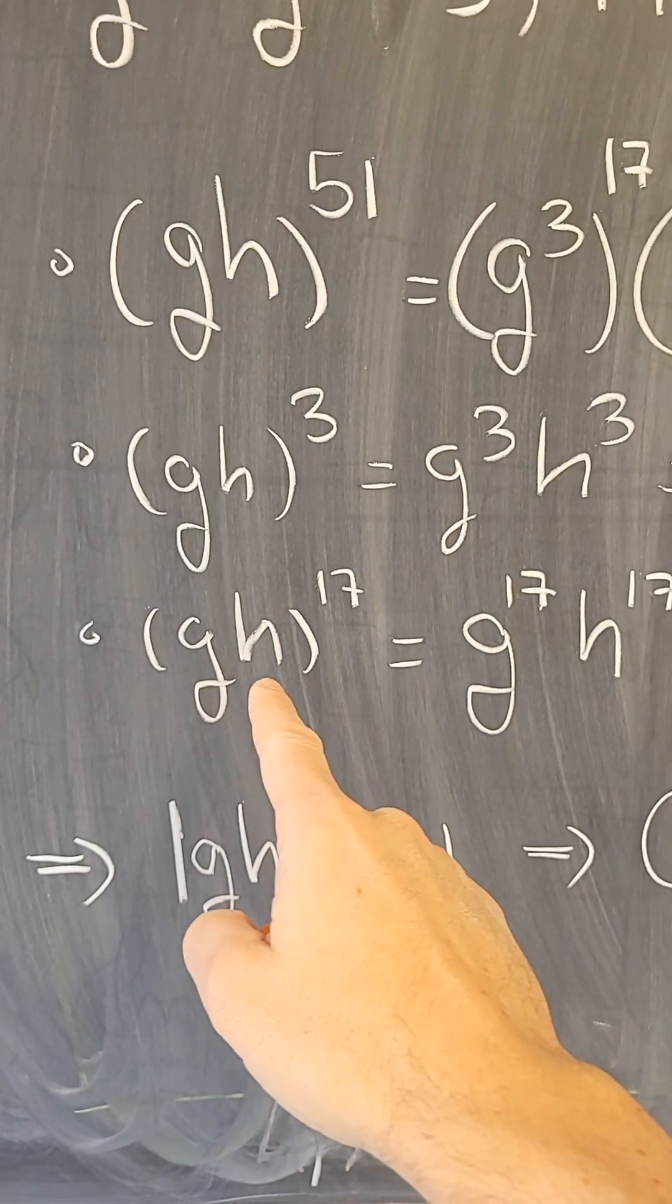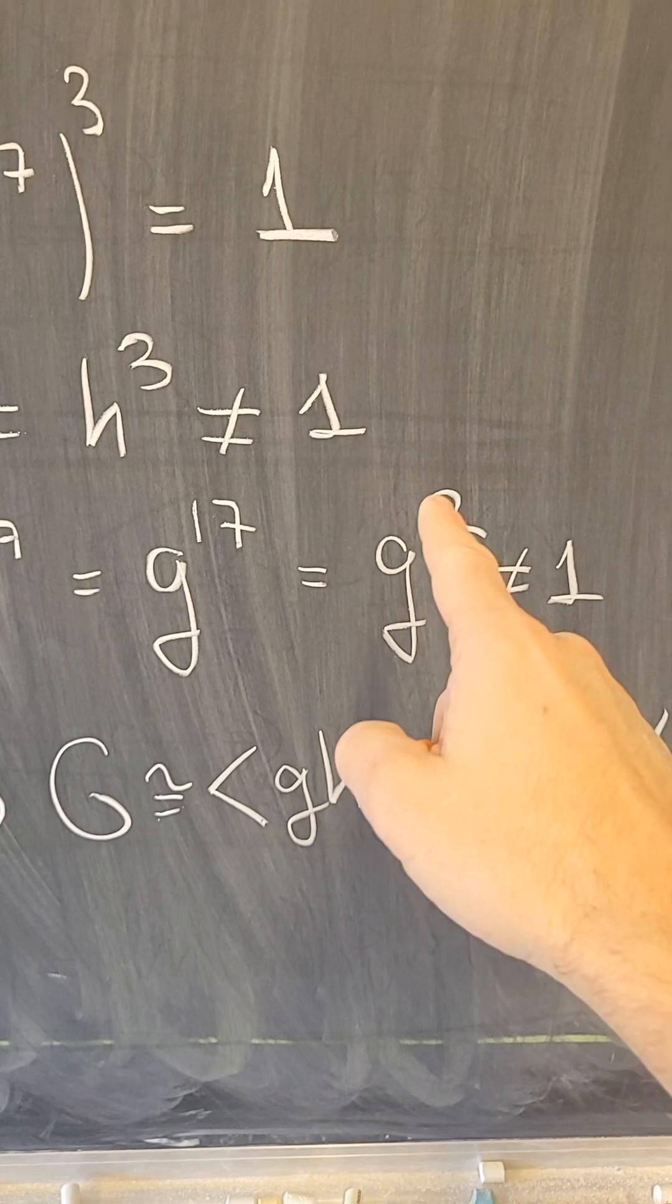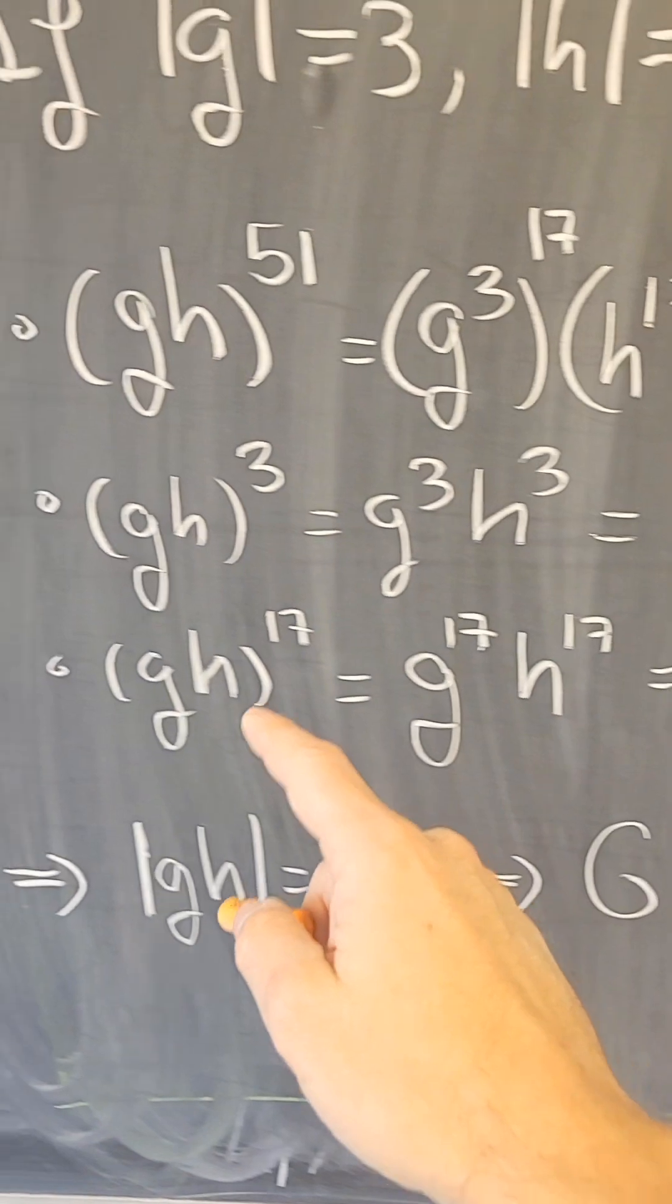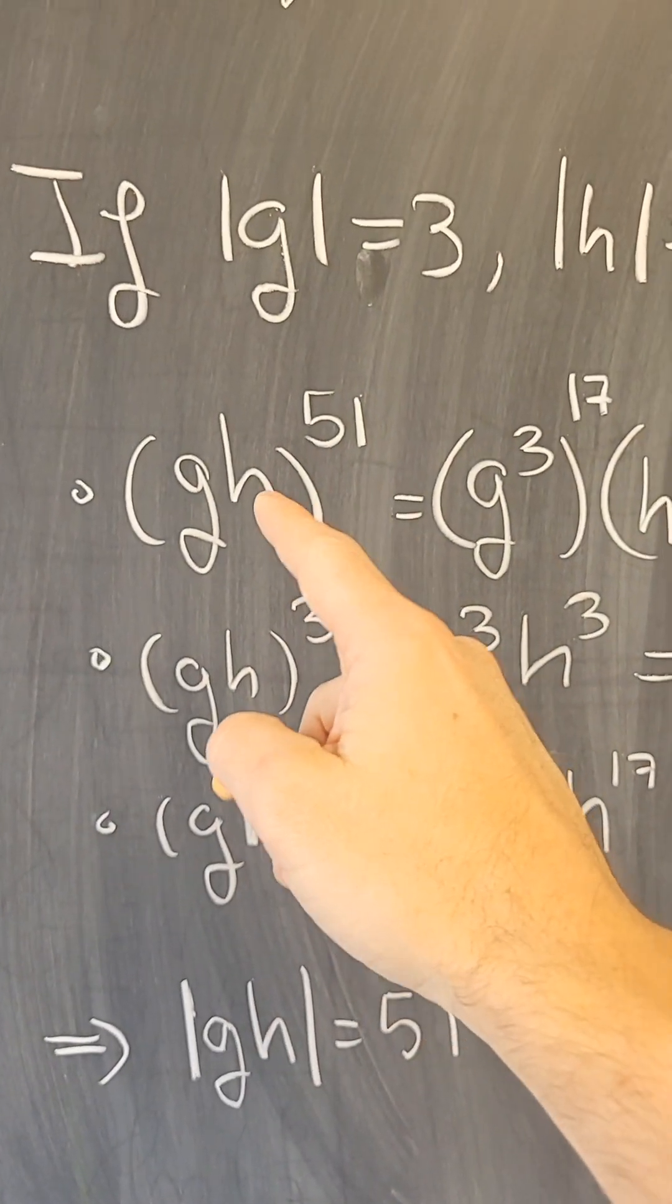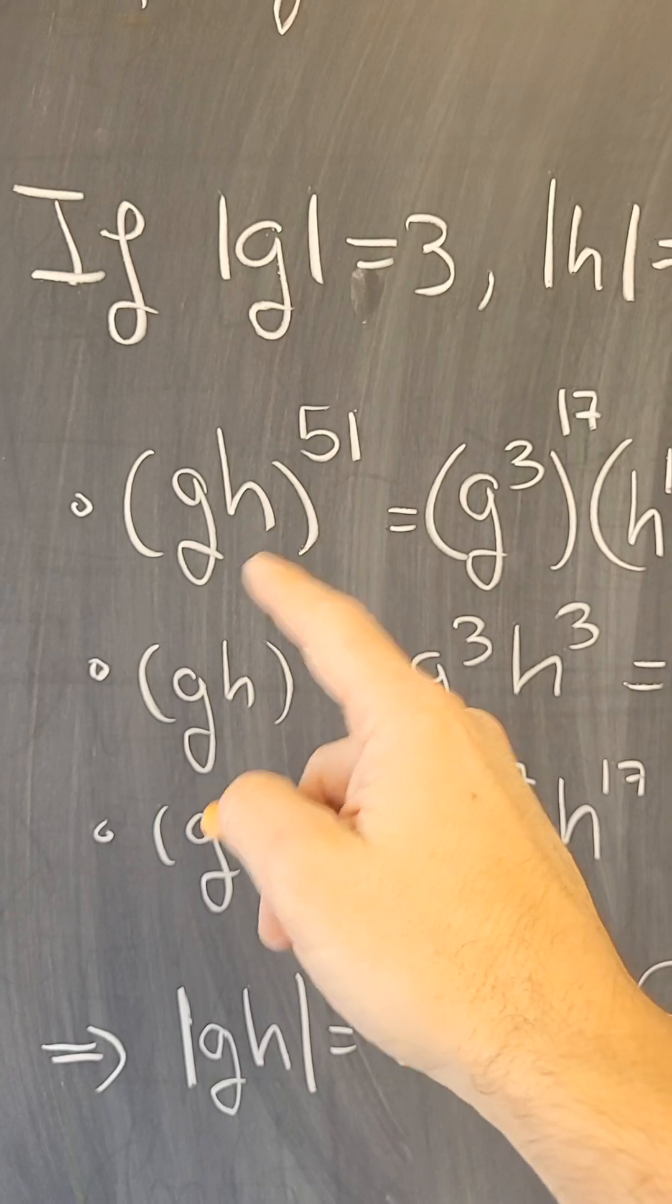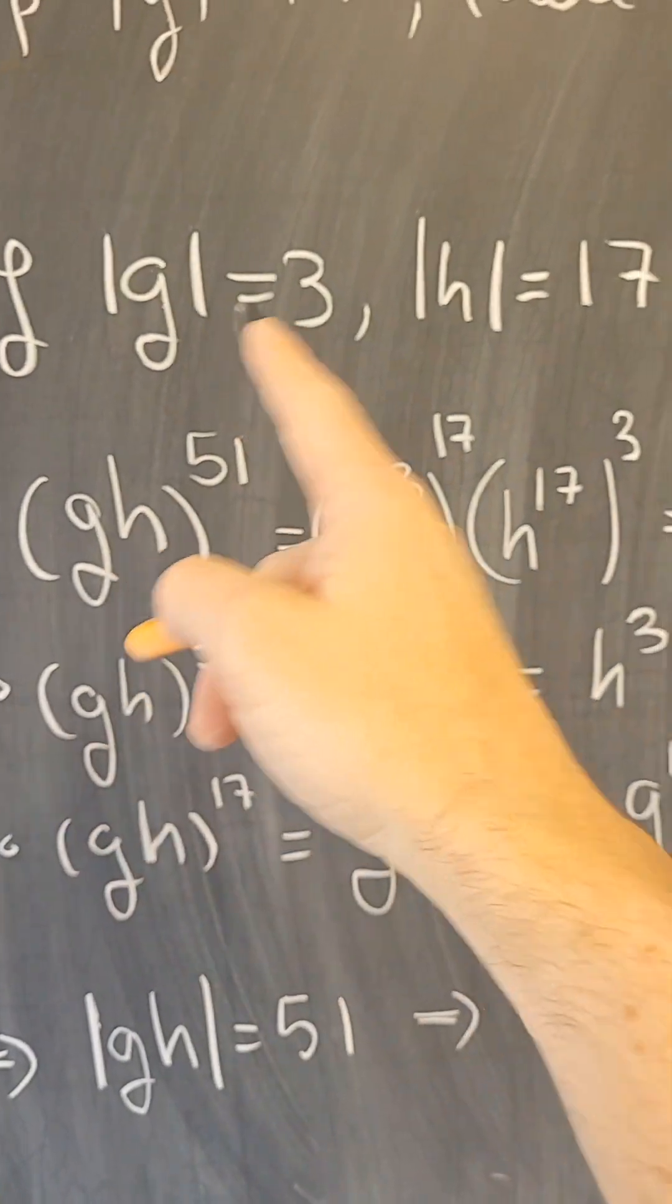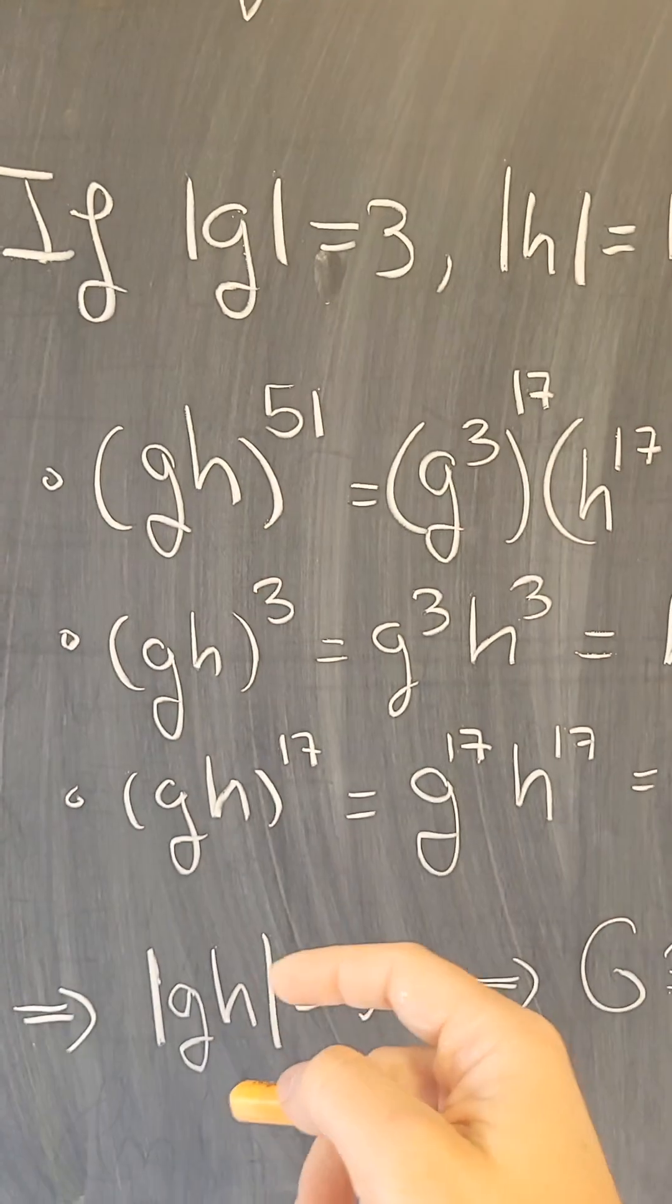Similarly, g times h to the 17th power is g to the 17, which equals g squared, which is not the identity because g has order 3. g times h is not the identity because g and h are not inverses of each other. The subgroups of g and h are disjoint, and g and h have different orders, so they cannot be inverses of each other.